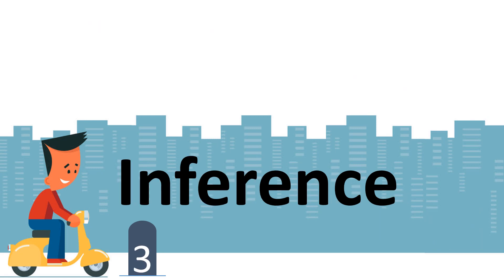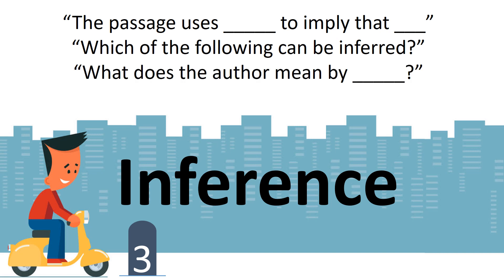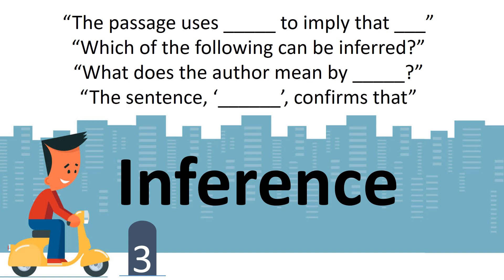Number three is inference — a very common type of question. Examples include: 'The author uses blank to imply what?' or 'Which of the following can be inferred from the paragraph?' or 'What does the author mean by this?' or 'The sentence confirms that what happens?' For inference questions you have to understand the implied meaning — you have to read between the lines. Students have the lowest accuracy in this topic, and 20% of questions are going to be based on inference.